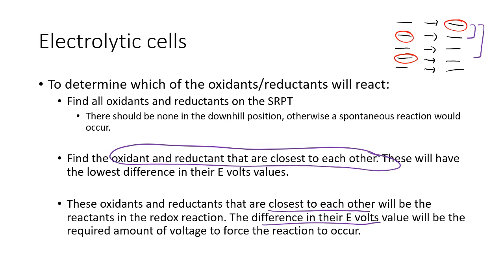When working out which pair will actually react, don't just go by visual proximity on the table — you have to look at the actual E° values. There may be multiple candidate pairs, and you need to calculate the difference for each to determine which pair is truly closest and will therefore be the one that reacts.